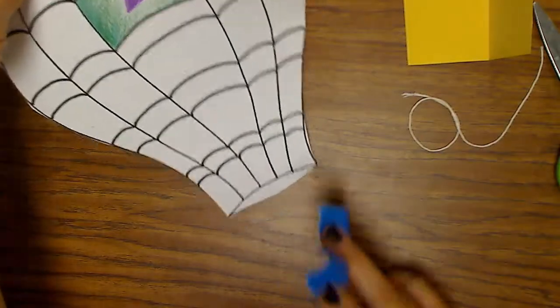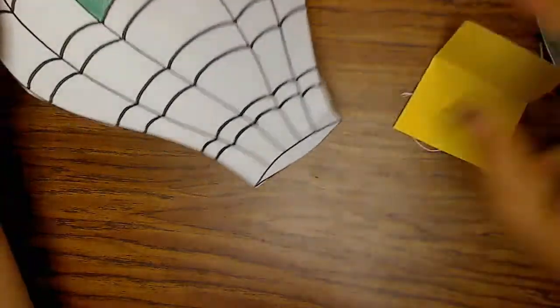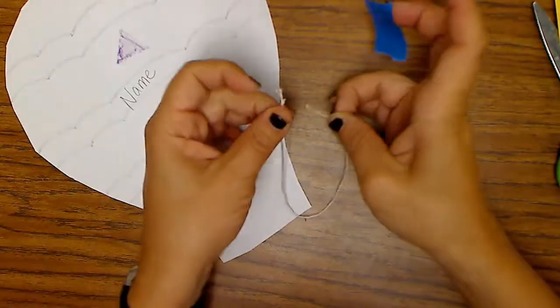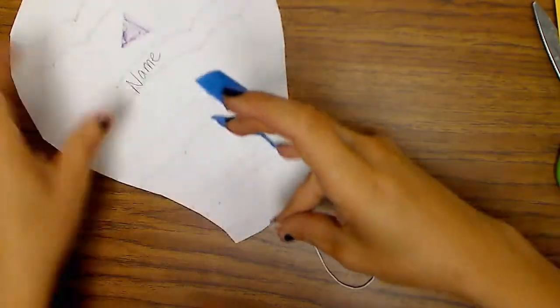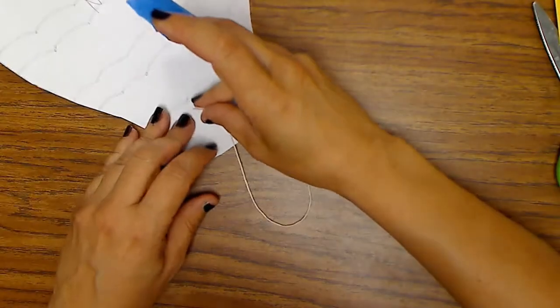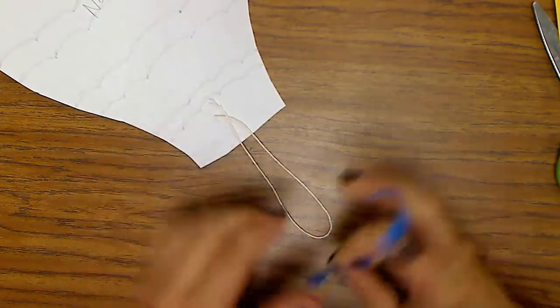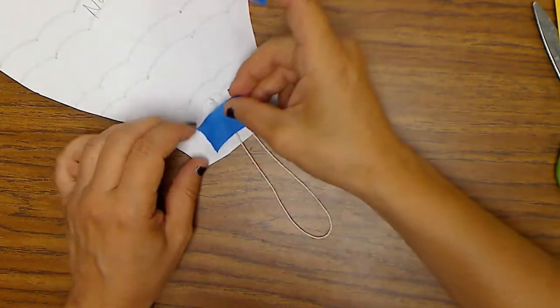That's to attach your basket to your balloon. You're going to turn your paper over, take the two ends of the string together, and put those near the bottom of your balloon. Keep them together and then put one piece of tape right here and press down really hard.